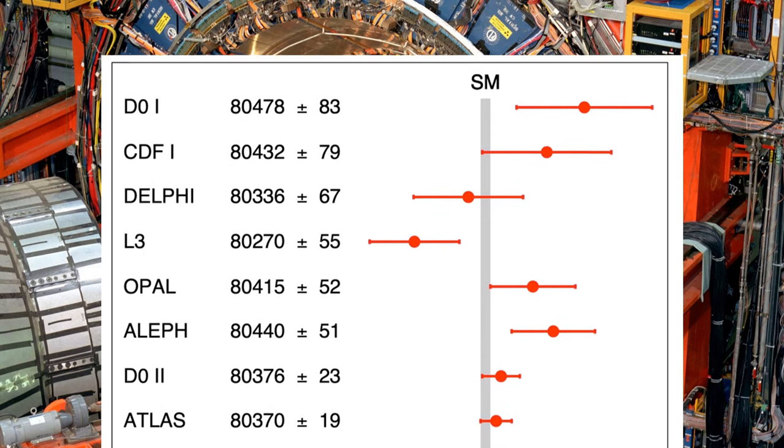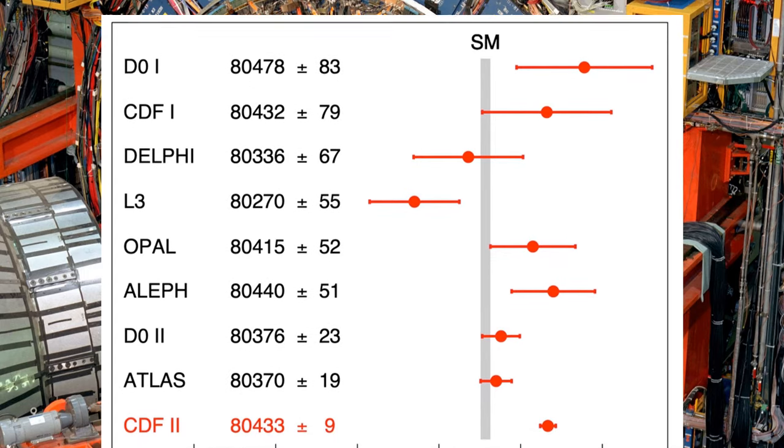The horizontal bars indicate the uncertainty of the measurements achieved by various experiments.